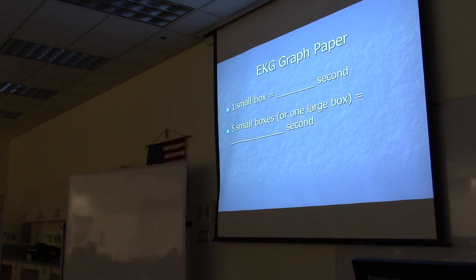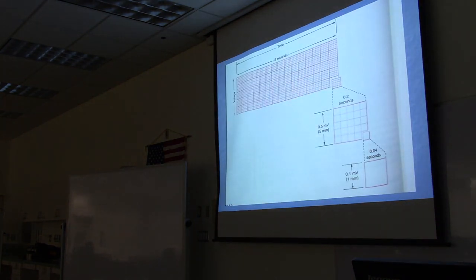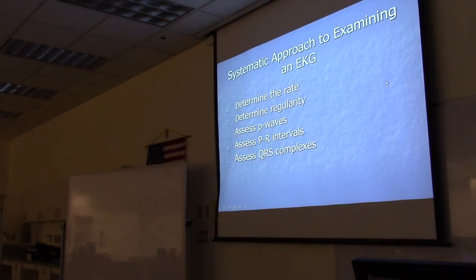On EKG graph paper, one small box equals 0.04 seconds, and five small boxes make one large box equaling 0.2 seconds. The paper has lighter small boxes and darker large boxes. An EKG tracing is assessed using the same criteria each time.